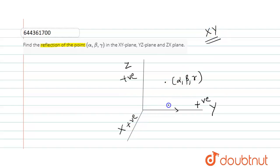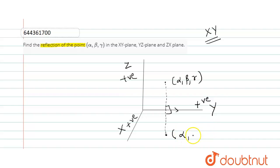Now I have to find the reflection of alpha, beta, gamma in the XY plane. The point is in the first octant, so its reflection will be below the XY plane at an equal perpendicular distance. The Z coordinate becomes negative while the others remain the same. So the reflection R in the XY plane has coordinates alpha, beta, minus gamma.